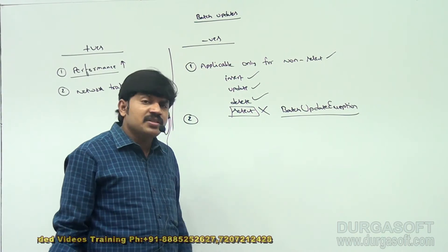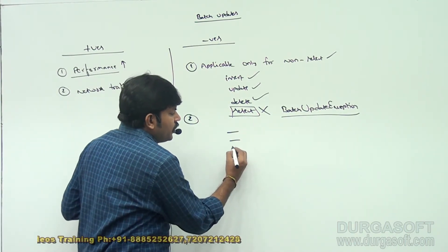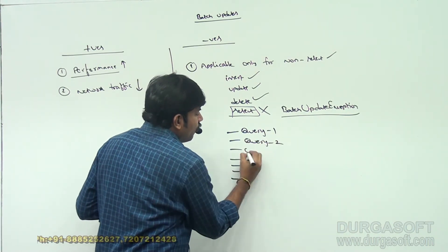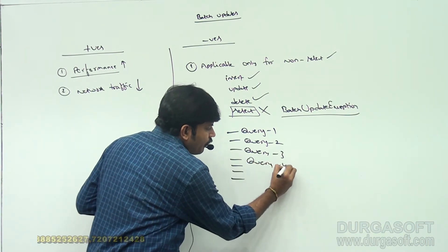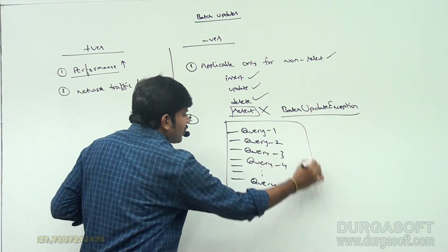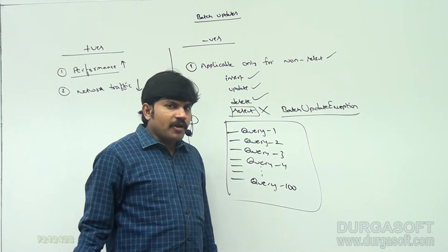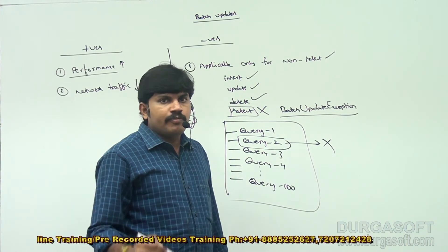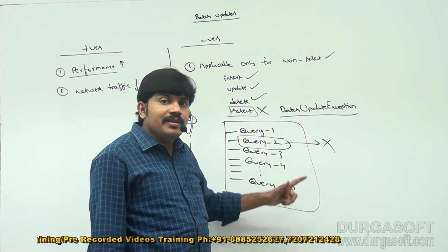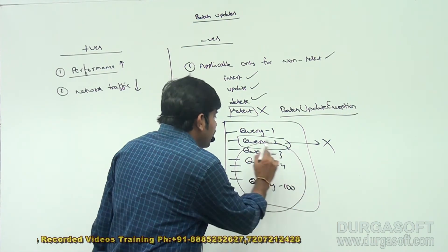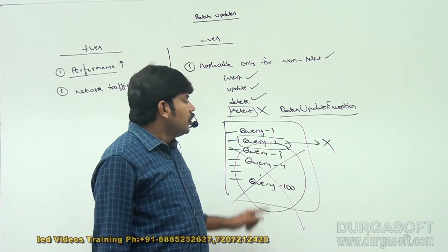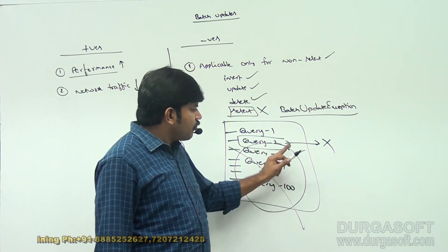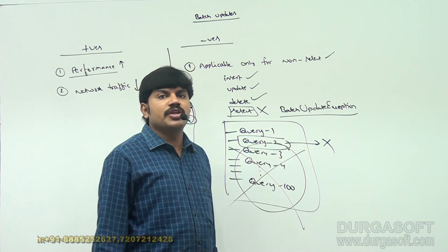There is one more limitation. A batch is nothing but a group of SQL queries. If you have query one, query two, query three... up to query one hundred, that is a batch of hundred queries. The problem is: if the second query execution fails - perhaps values weren't provided properly - then the rest of the SQL queries in the batch won't be executed. If one SQL query execution fails, the remaining queries have no chance of execution.